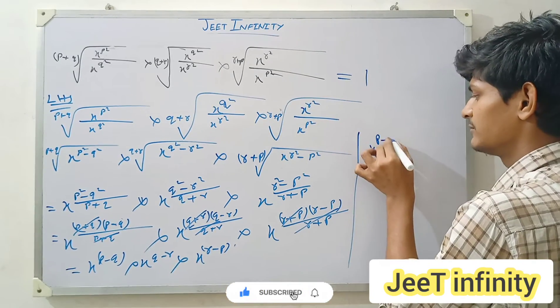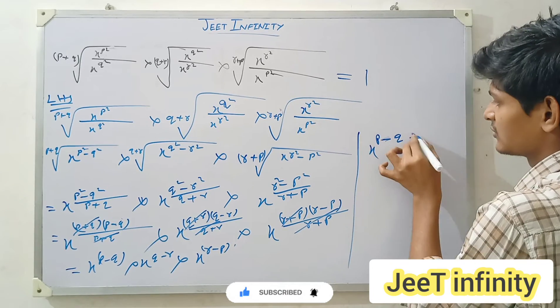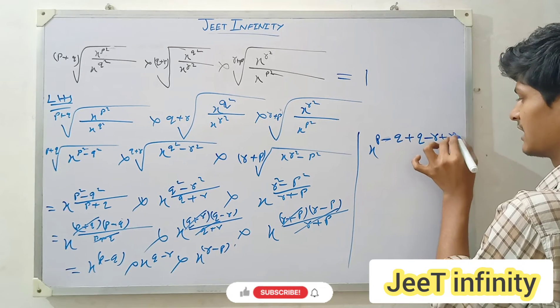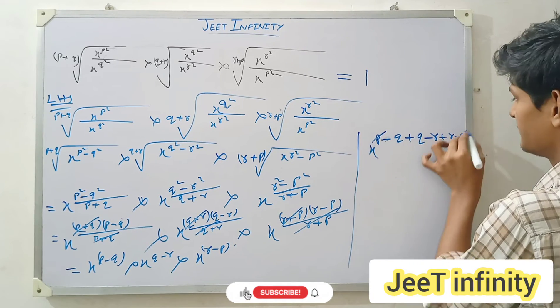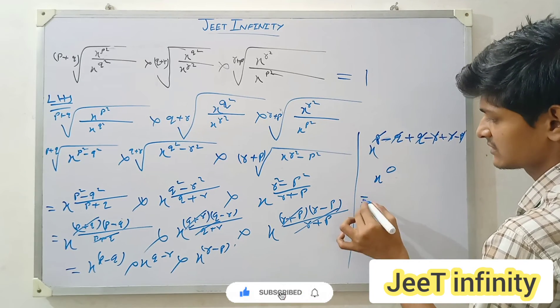So here, when the base is the same, the powers should be added: (p minus q) plus (q minus r) plus (r minus p). Okay. p and p cancel, r and r cancel, q and q cancel. x to the power 0 means 1.